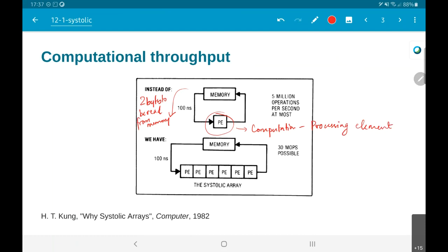What this means is because you are reading two bytes and reading each byte basically takes 100 nanoseconds at the 10 megabyte per second rate, it means that you can do 5 million operations per second.